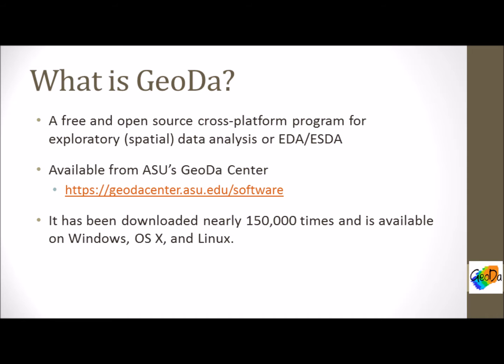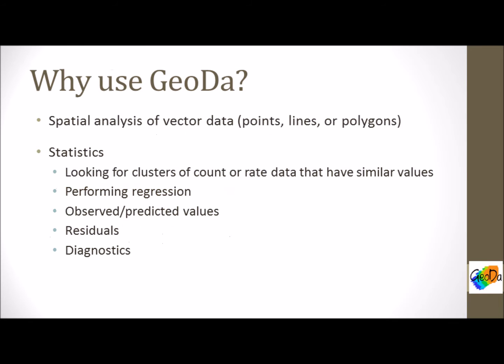It's available from Arizona State University's GeoDa Center, which is home to Luke Anselin. You may be familiar with his name because of Anselin's Moran's I, a local indicator of spatial autocorrelation, or LISA, and it's been downloaded nearly 150,000 times. Don't worry if you're not familiar with Moran's I — we'll cover that as we go along.